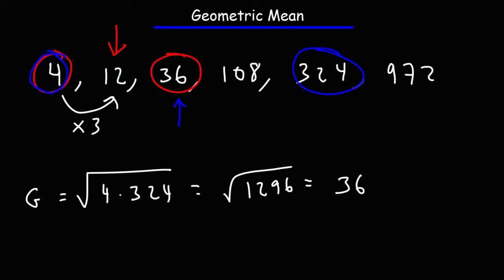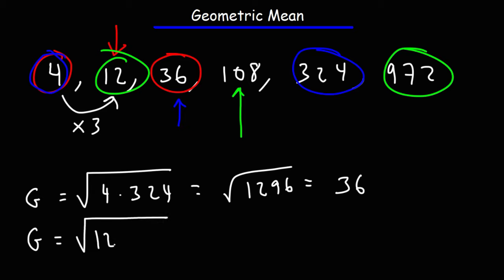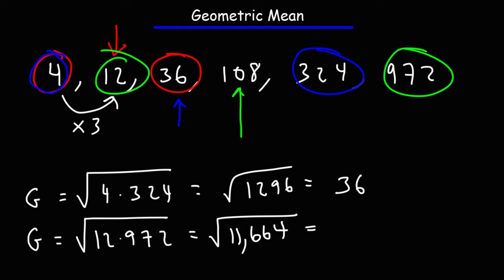What about the geometric mean between 12 and 972? The number in between 12 and 972 is 108. If we take the square root of 12 times 972: 12 times 972 is 11,664. And if you take the square root of that number, that will give you 108.